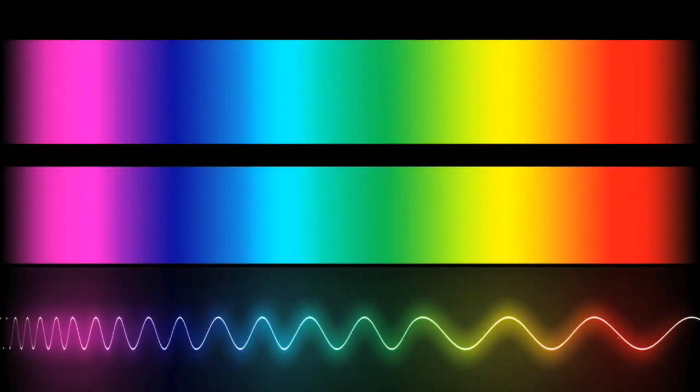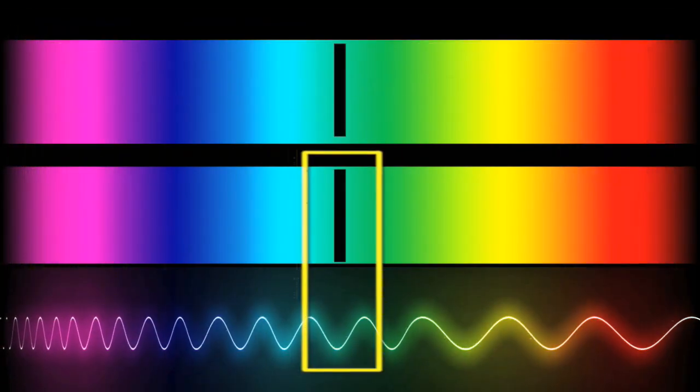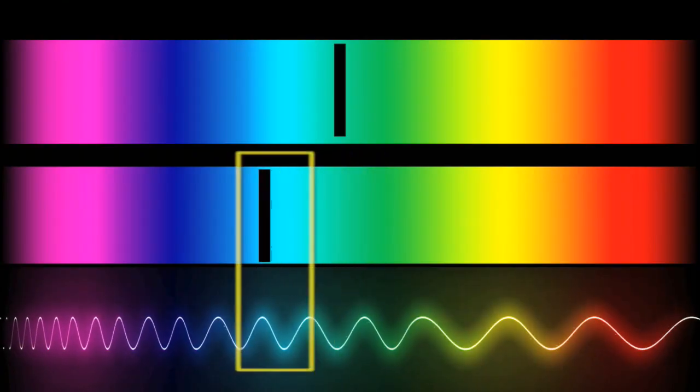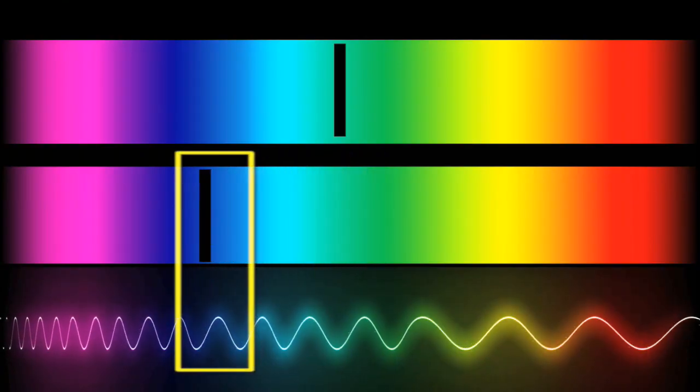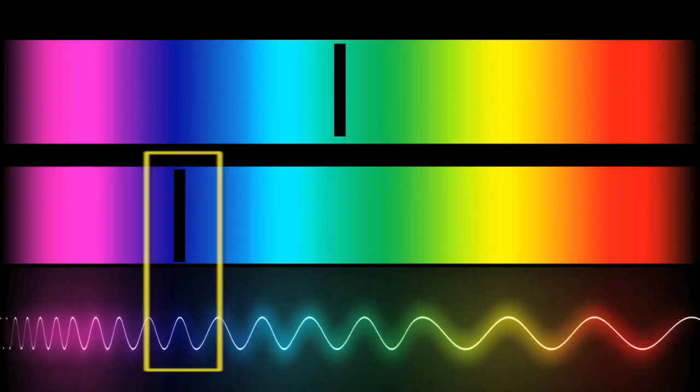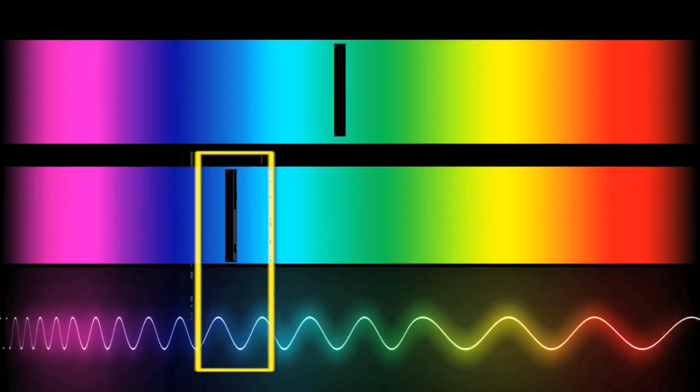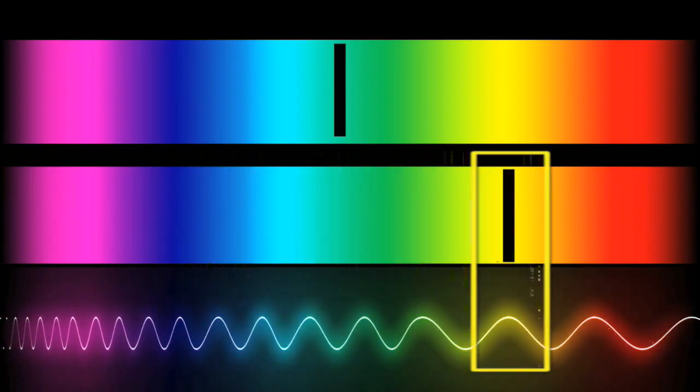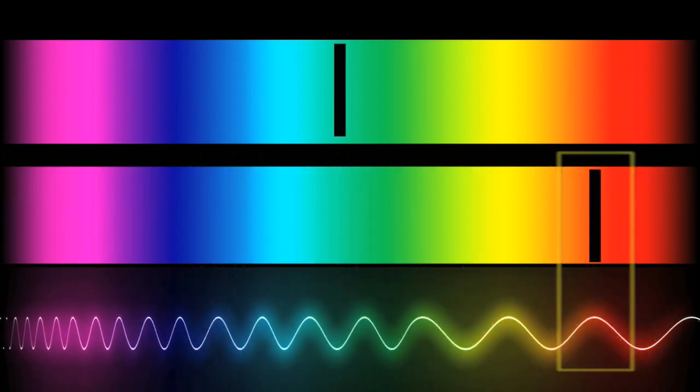Redshift is the astronomical version of the Doppler effect. In redshift, the peaks of electromagnetic waves are detected closer together as a source is moving towards us, which means that the light is shifted towards the blue portion of the spectrum. If a source is moving away from us, the wave peaks are more stretched out, and hence the light is shifted towards the red portion of the electromagnetic spectrum.